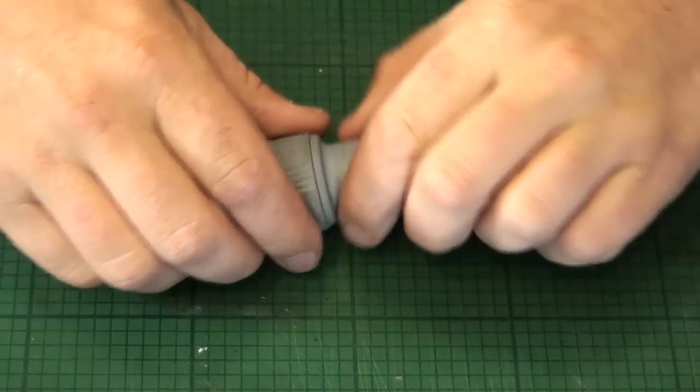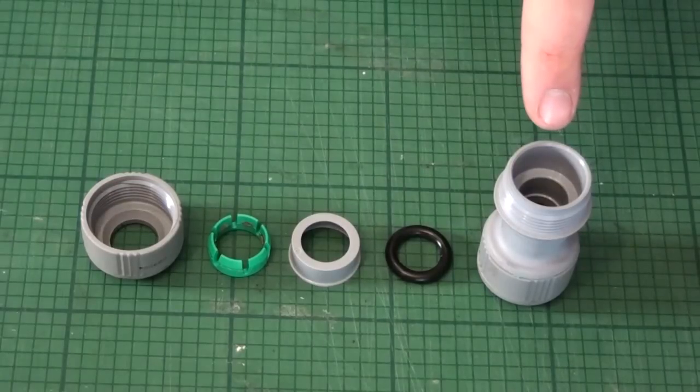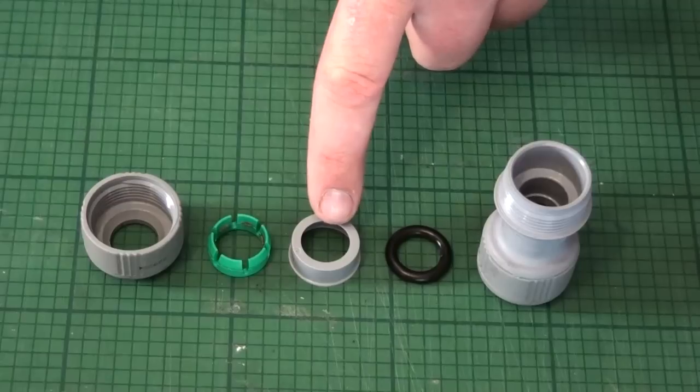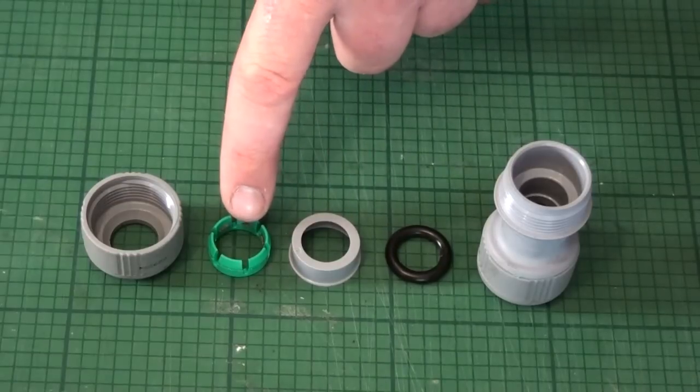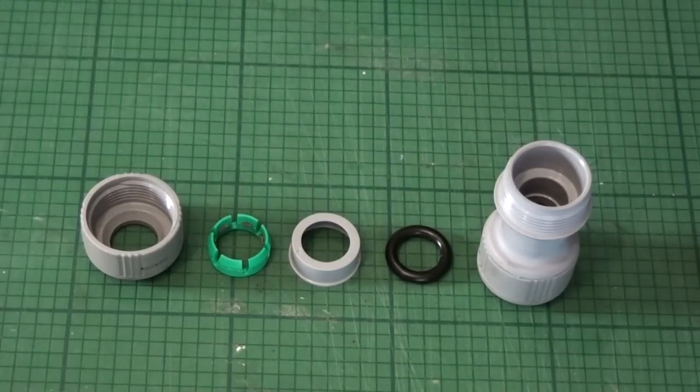Let's look at how a push fit fitting is assembled. There is the main valve body, the rubber sealing washer, the washer jumper that holds the rubber washer in place, the pipe clamp that holds the pipe in place, and the end nut that holds all this tightly together in one piece.